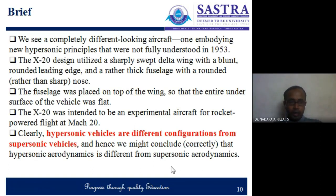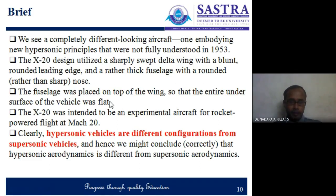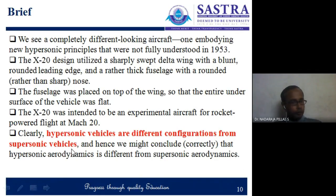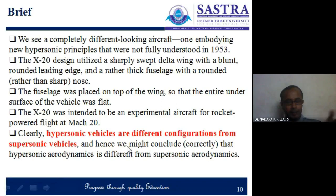The X-20 had a rather thick fuselage with a rounded nose, and the fuselage was placed on top of the wing so the entire under-surface of the vehicle was flat. It was intended to be tested using rocket-powered flight at Mach 20. The X-20 was not developed to a commercial stage, but the similar design was utilized later. We can therefore conclude that hypersonic vehicles are a different configuration from supersonic vehicles, and hypersonic aerodynamics is different from supersonic aerodynamics.